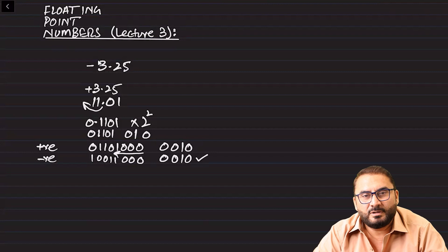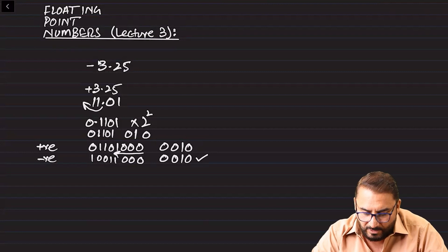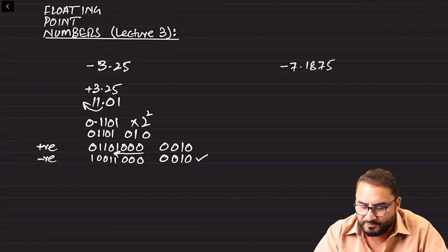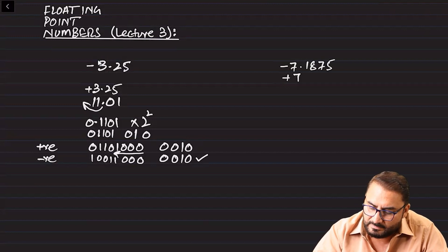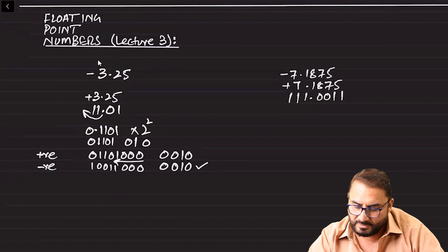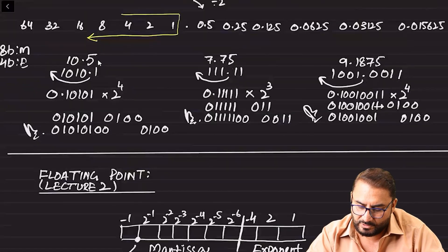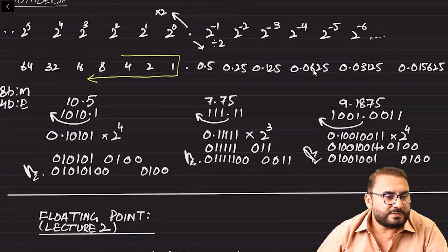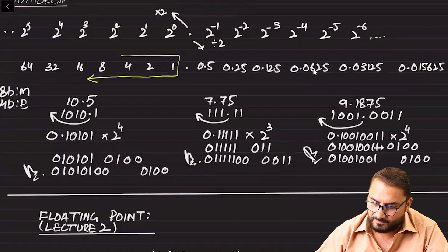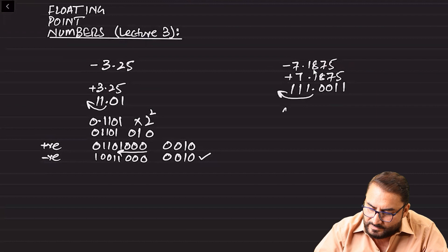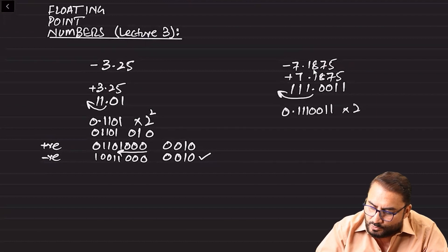Now let's solve minus 7.1875. First we will solve positive 7.1875. This will be 111.0011. Now 0.1875 is basically 0.125 plus 0.0625. We move the point all the way towards the left: 0.1110011, times two to the power three, because we have to bring the point back three times to get the fixed point number back.